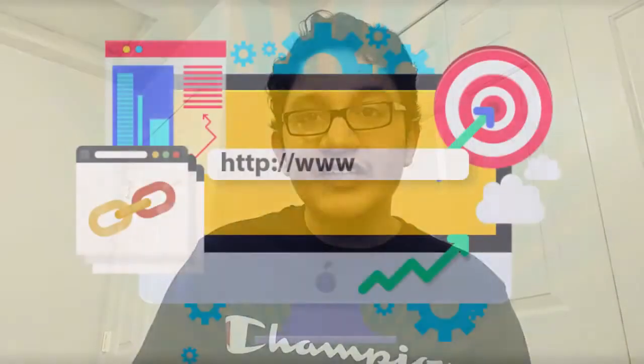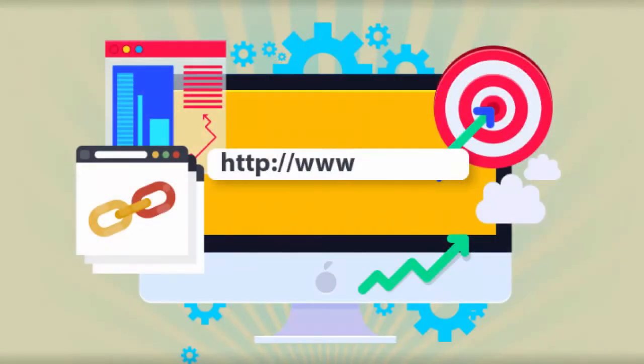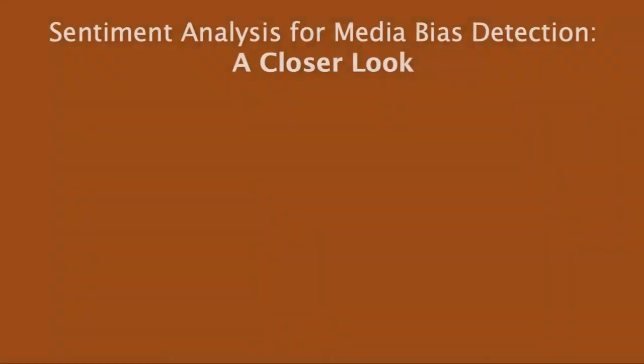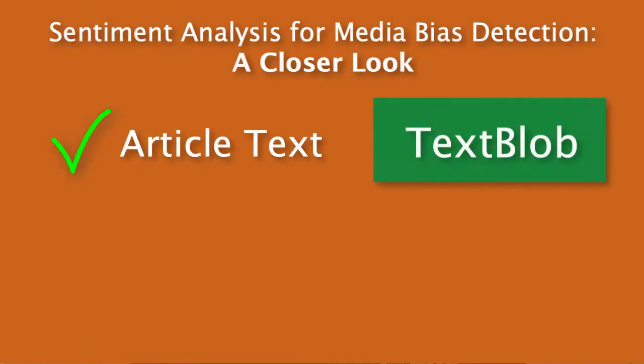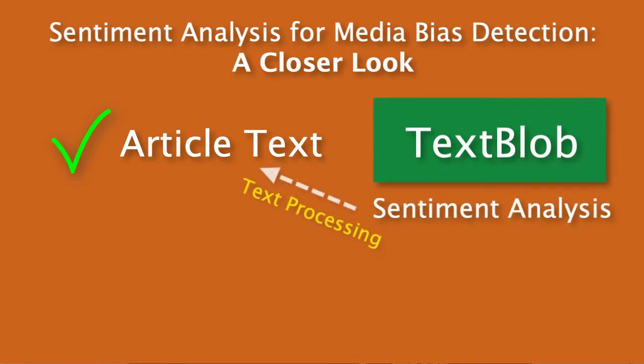If you watched the previous videos in this course and video series, you would have noticed that we were able to successfully extract the latest and most recent article URLs from the technology section of the New York Times. Now that we've extracted the important text that we need, we can use packages like TextBlob, which are designed for sentiment analysis and text processing, to scan these articles.